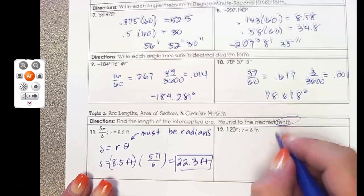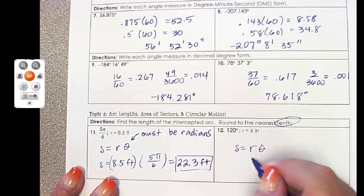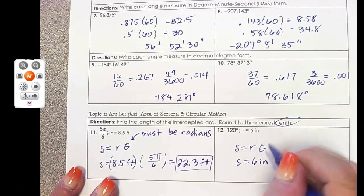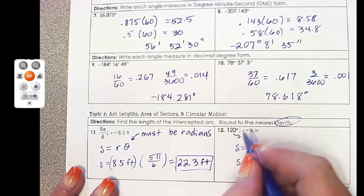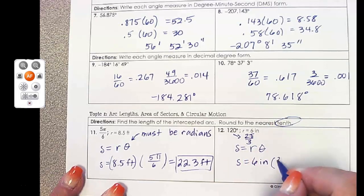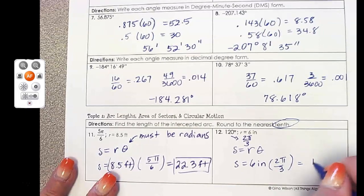To use that formula for problem number 12, I can plug in the R. That's 6 inches, but my θ, I have to change 120 degrees into radians. So I get 2π over 3. I'm going to multiply that out, and I get 12.6 inches.